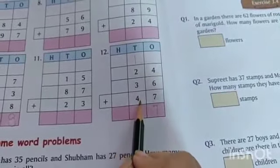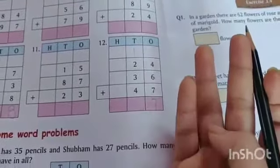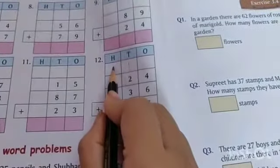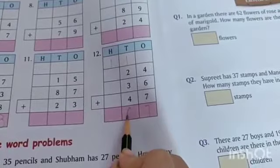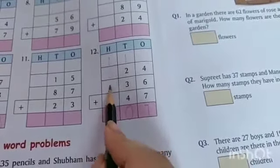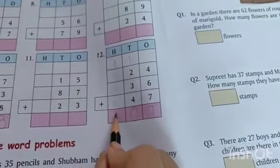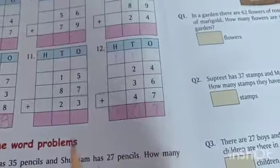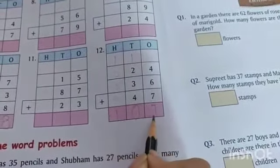Now 6 plus 4: 6, 7, 8, 9, 10. So 1 carry to the hundreds column and 0. 1 in the hundreds column, so we write here 1. So the sum is 107.